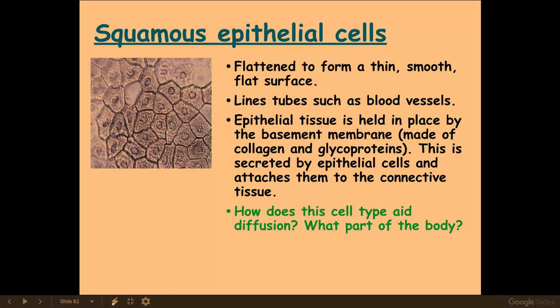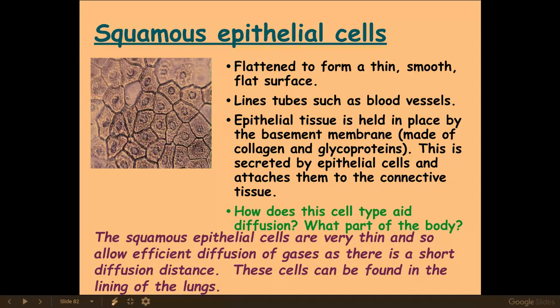Squamous epithelial cells have a very flattened, thin, smooth, flat surface. They are used to line tubes such as blood vessels like capillaries, arteries and veins, and they also line the alveoli in the lungs. This epithelial tissue is held in place by the basement membrane. The key thing about squamous epithelial cells is that they increase the rate of diffusion because they have such a short diffusion distance, achieved by their very thin structure.